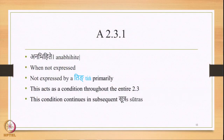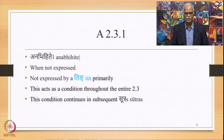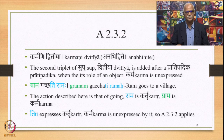Now let us study the Sutras which prescribe the Sub-triplets to express the unexpressed Karakas. The first Sutra in this section is 2.3.1: 'Anabhihite,' meaning 'when not expressed' — primarily when not expressed by a Ting. This acts as a general condition throughout the entire section 2.3, continuing in subsequent Sutras. So whenever a particular Karaka is not expressed by a Ting, you add the respective Sub-triplet to express it.